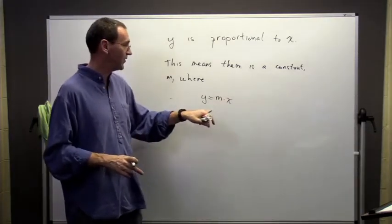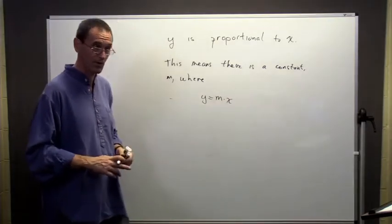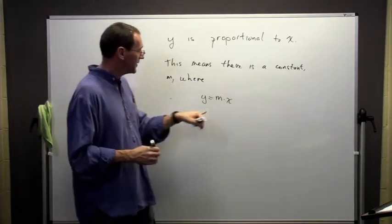So the idea is if x doubles, y doubles, x triples, y is going to triple. But this m, what does it mean?